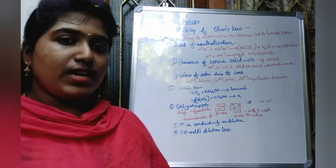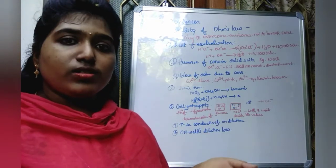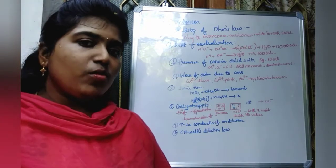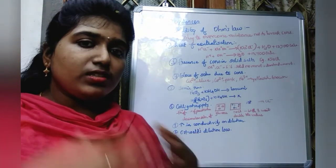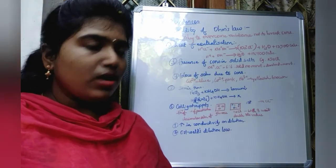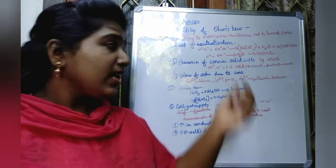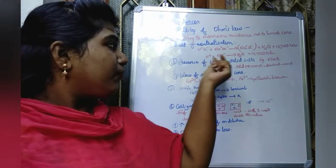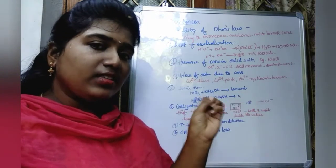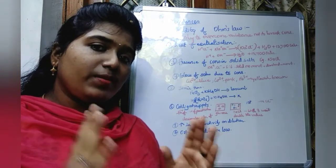The second evidence is the heat of neutralization. Taking 1 gram equivalent of a strong acid like HCl, H₂SO₄, or HNO₃ and a strong base like NaOH, the reaction produces NaCl, water, and 13,700 calories of energy — and this value is common regardless of which strong acid or base is used. This means the 13,700 calories arises from the formation of water from H+ and OH−, showing that strong acids and strong bases are completely ionized in solution.